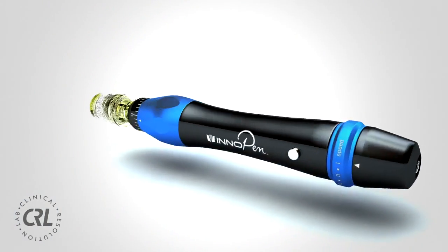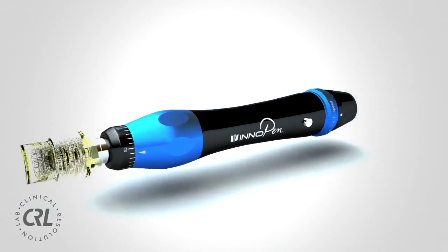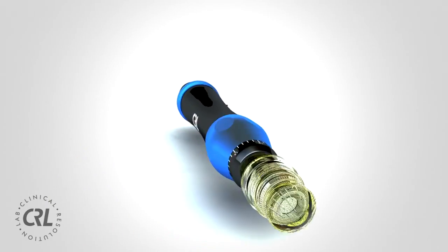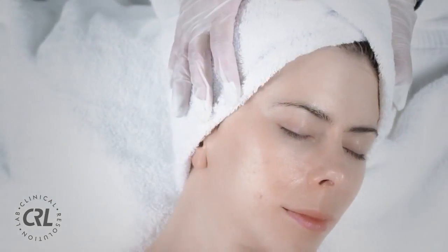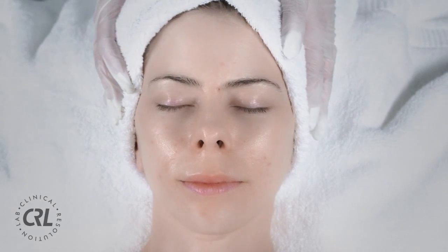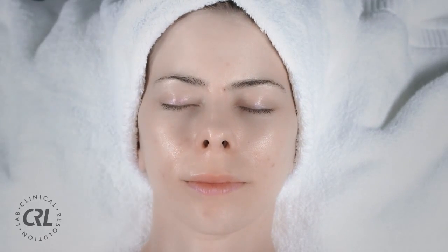To better understand how Innopen's patented technology works, let's first take a closer look into the arena in which it performs. The skin is the body's largest and most essential organ. It is a dynamic organ in a constant state of change. The dead cells of the outer layers are continuously shed and replaced by inner cells moving up towards the surface.